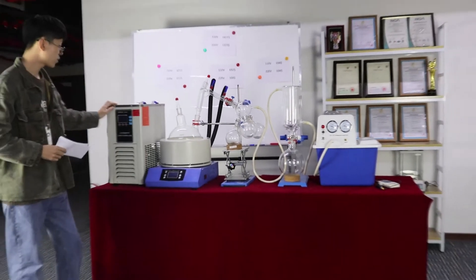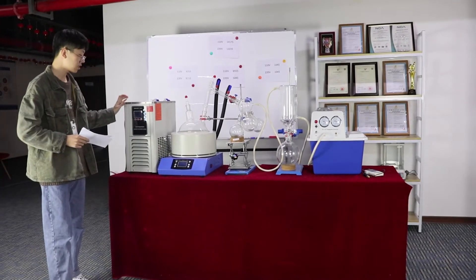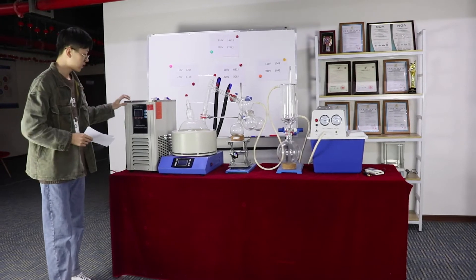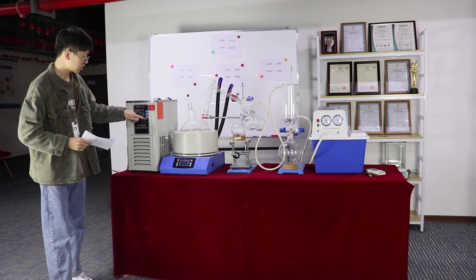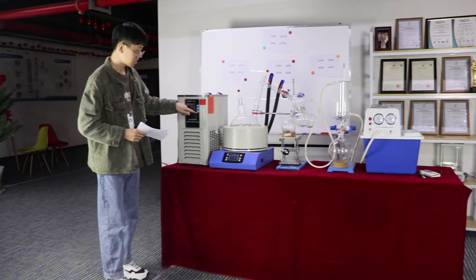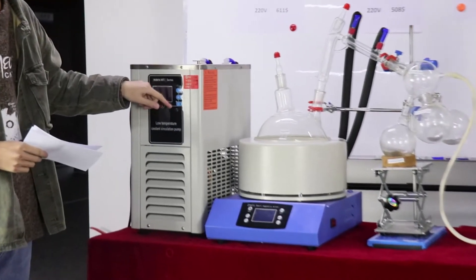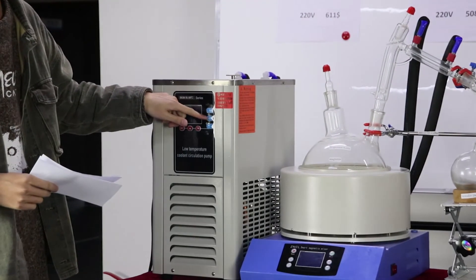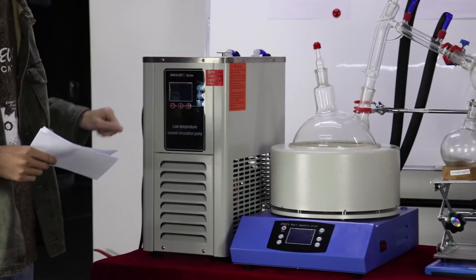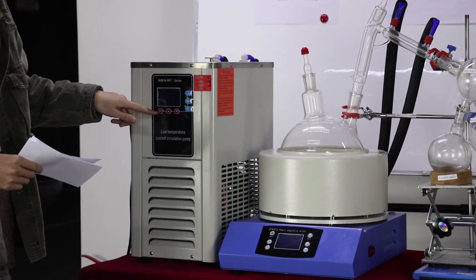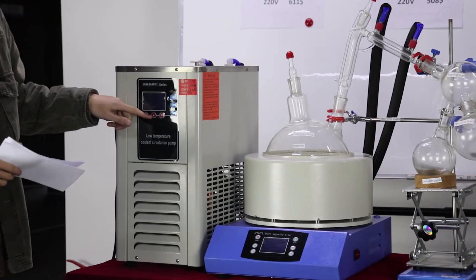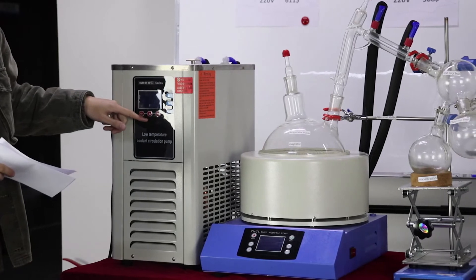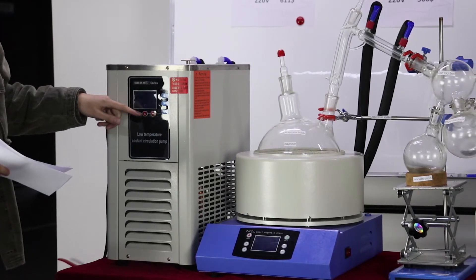This is cold chiller, cooling chiller. This is a switch: refrigeration and cycle. This is sighting. It can adjust the temperature and time.